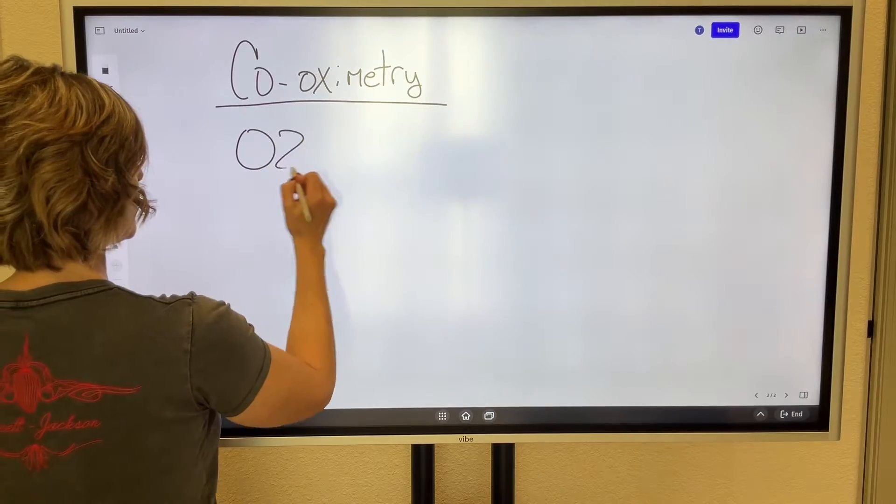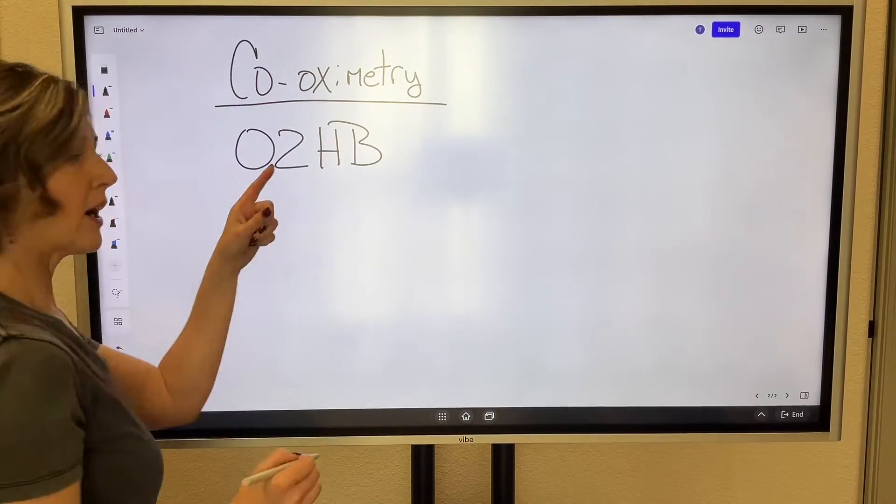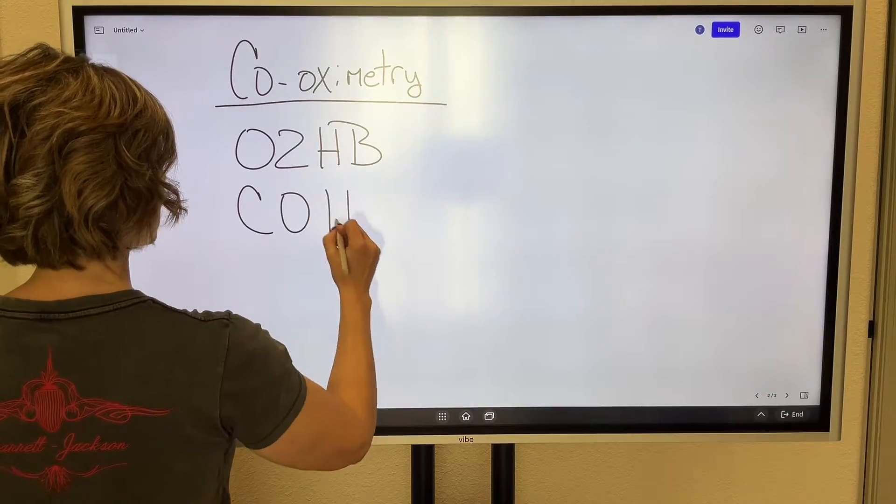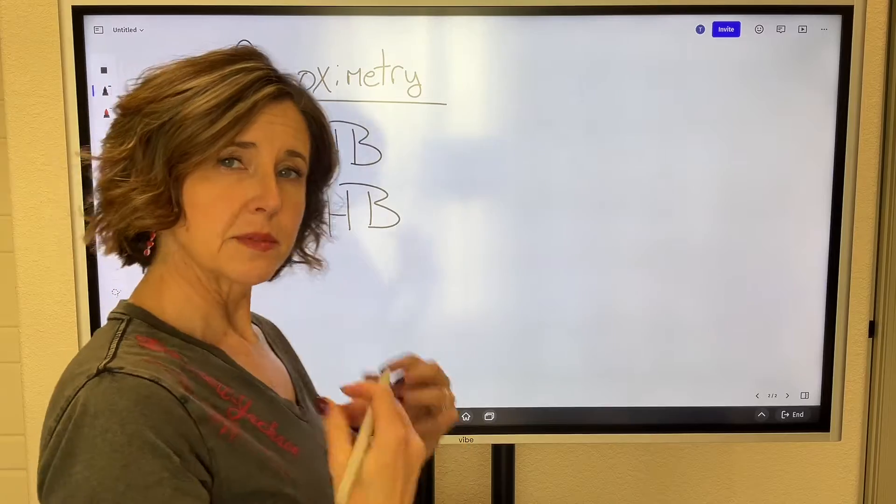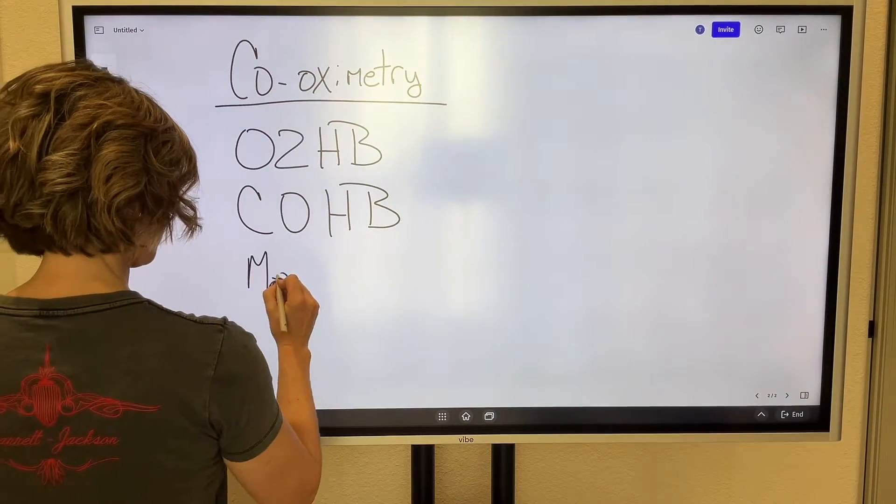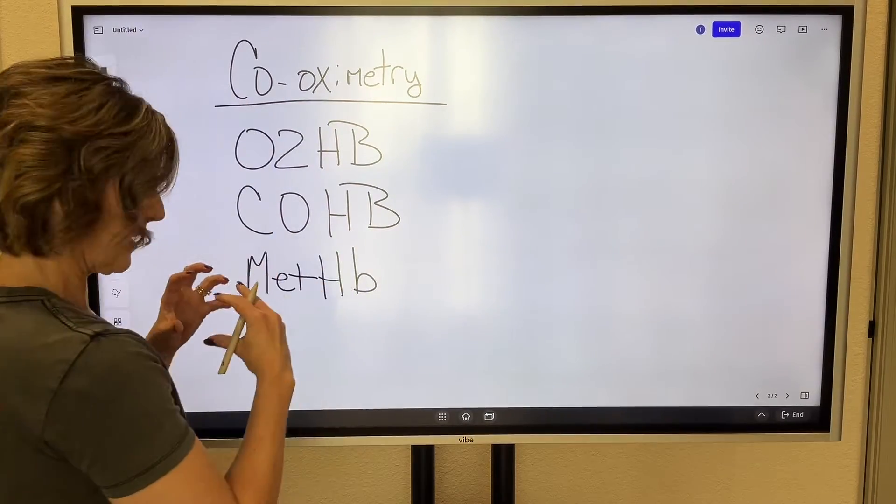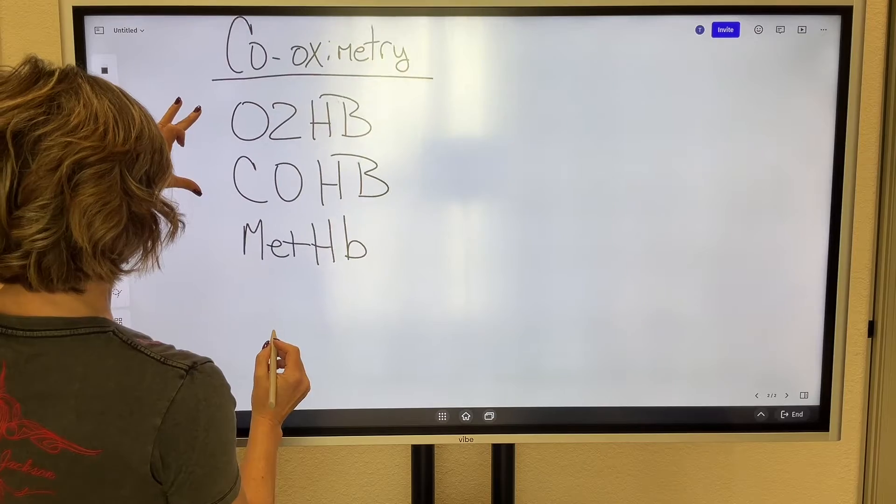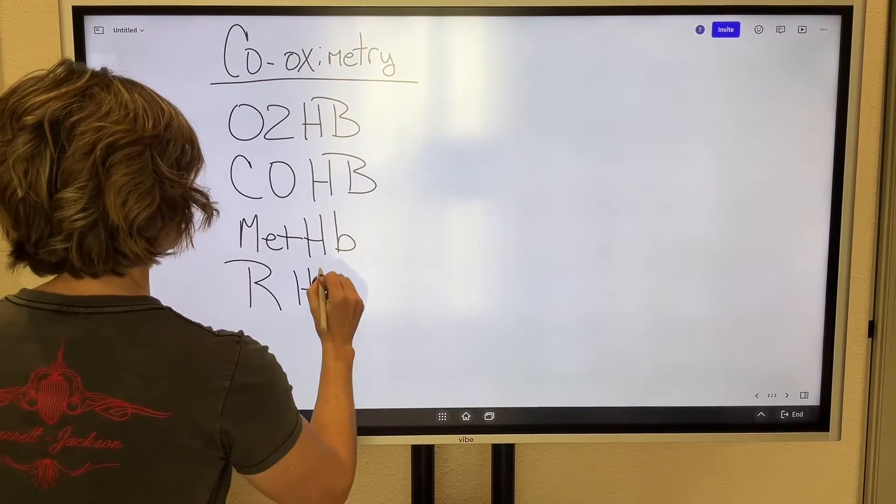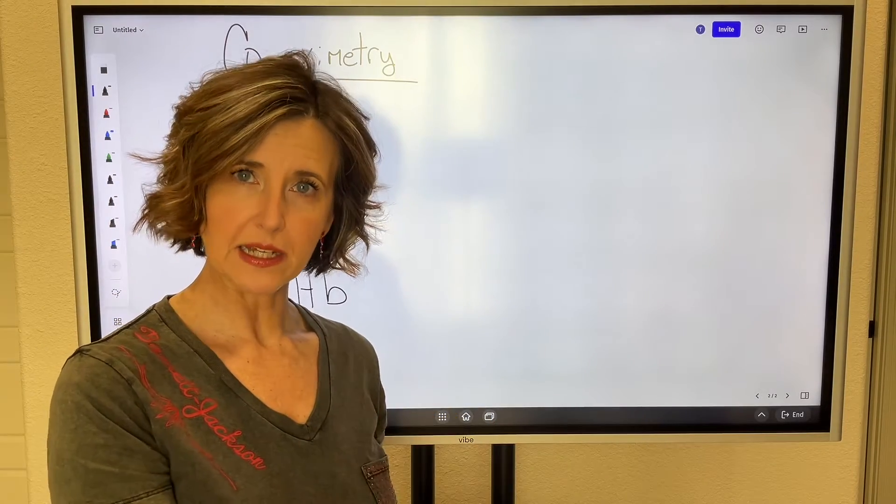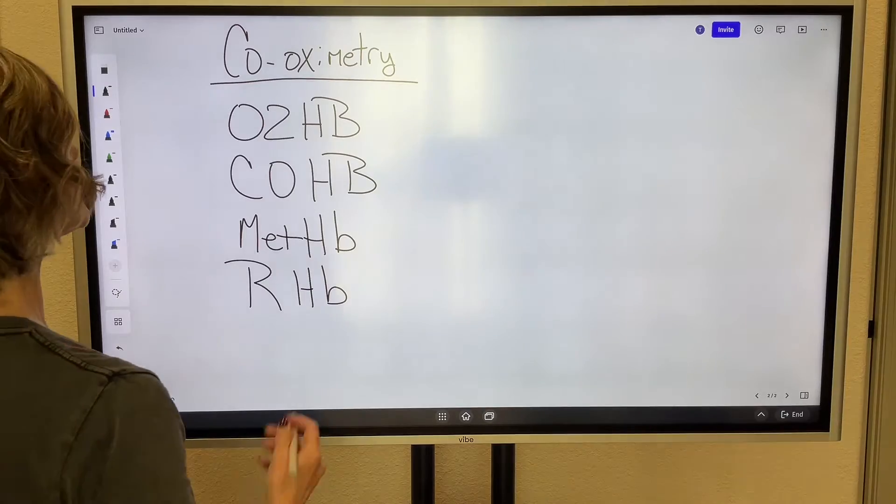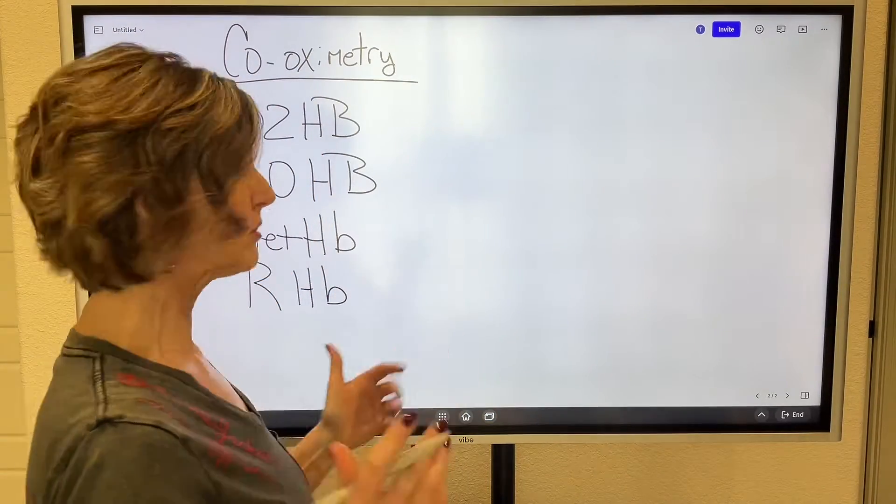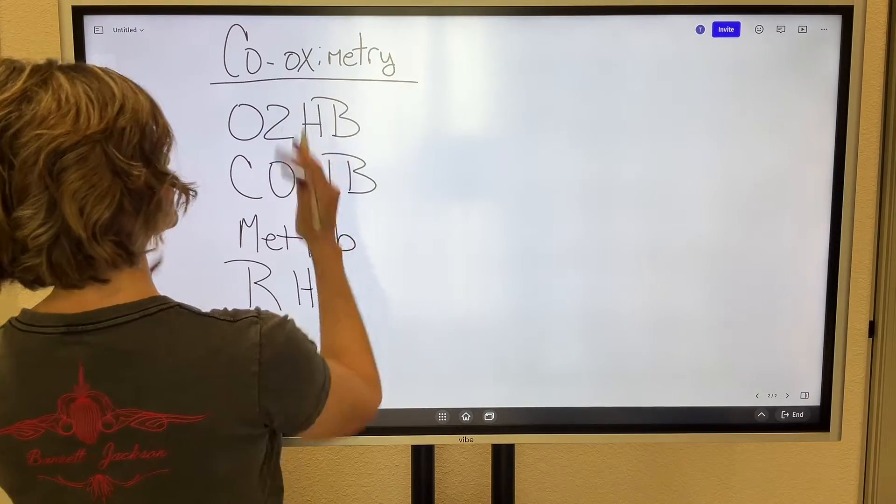So when we run blood through a co-oximeter, we're going to get different results. We're going to know how much oxygen is on that hemoglobin. We are going to know how much carbon monoxide is on that hemoglobin. Sometimes in certain situations, something called methemoglobinemia happens, and then we have this iron-like molecule on the hemoglobin instead of oxygen. And then we also have reduced hemoglobin. In school, you may call this reduced hemoglobin deoxygenated hemoglobin. Let's just say we have an absolutely normal patient.